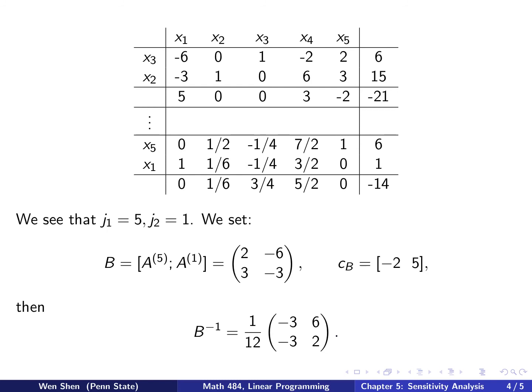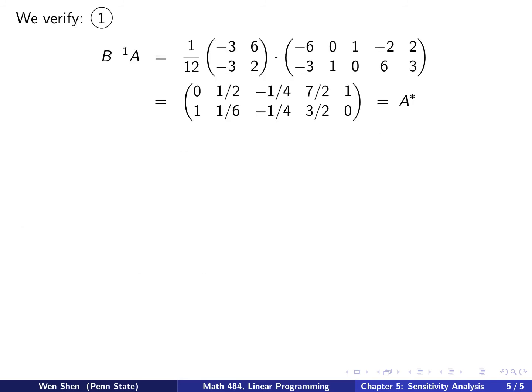B inverse is appearing in all these claims, so let's compute this first. It's a 2 by 2 matrix. We compute the determinant which is 12, then switch the two diagonals and make the off-diagonals negative. So B inverse equals 1 over 12 times this matrix. You can verify by checking B inverse times B equals the identity matrix.